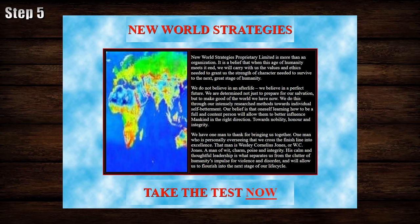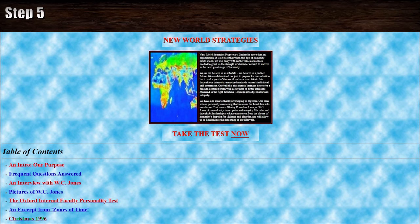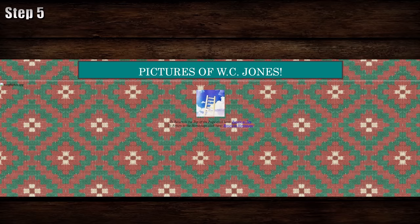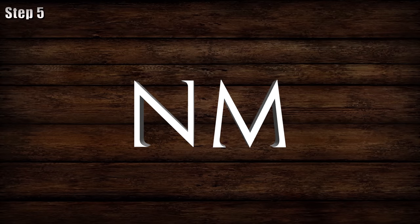Okay, this makes sense, doesn't it? A belief in making good of the world through intensely researched methods towards individual self-betterment. What better way than a load of instructional videos involving steps towards that self-betterment? There is a test available now, and a table of contents. It's best to inform your viewers that not all of it has substance — like the Christmas 96 page and pictures of W.C. Jones, which has a broken image and nothing else. The rest of the links have information for conveying the story, and it's a lot of text. You'll have to summarize fine details to keep viewers from switching to a more visually stimulating video.